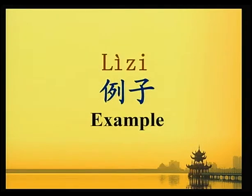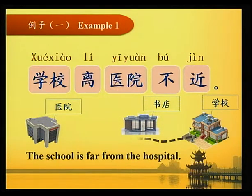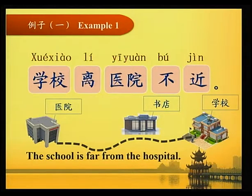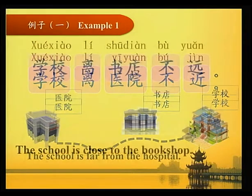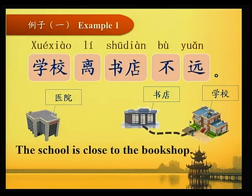例子 Examples. Example one: 学校离医院不近 — The school is far from the hospital. 学校离书店不远 — The school is close to the bookshop.